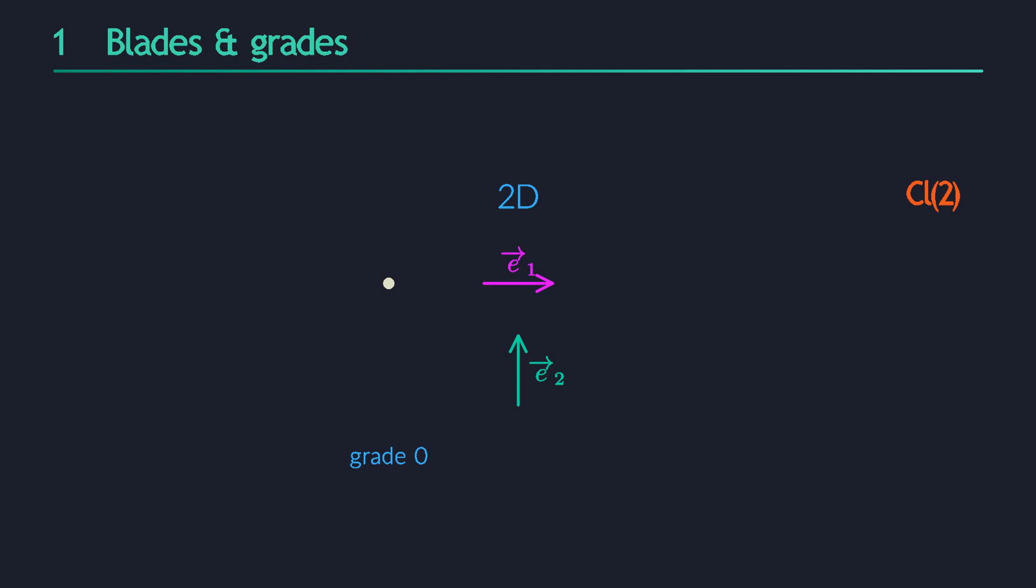Then, of course, we can also make a wedge product of only one basis vector. This just gives us that basis vector itself. We have two of them, so this adds two more basis objects into our bag. They both have a grade of 1, because they can be seen as a wedge product that contains a single vector.